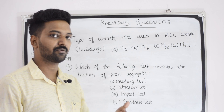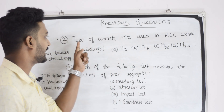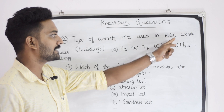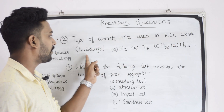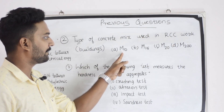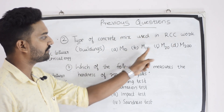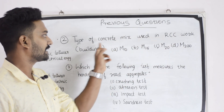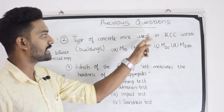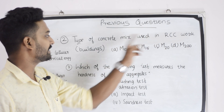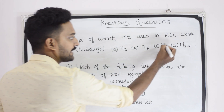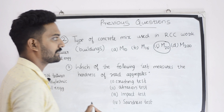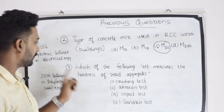What is the type of concrete mix used in RCC work or buildings? Option M10, M15, M20 and M200. The type of concrete mix used in RCC work or buildings — the answer is M20.